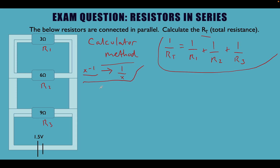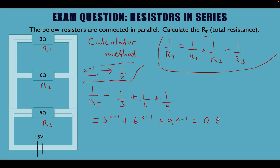For the calculator method, here's how we write it out. 1 over RT equals 1 over 3 ohms, plus 1 over 6 ohms, plus 1 over 9 ohms. An easy way to enter this into the calculator is to take each resistor value — 3, 6, and 9 — and type it as: 3 x⁻¹ plus 6 x⁻¹ plus 9 x⁻¹, then hit equals. That's going to give you a value of 0.61.